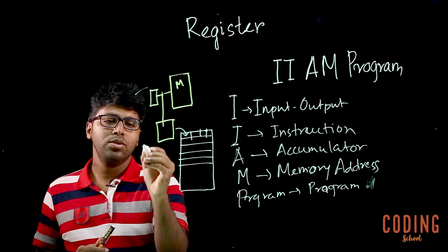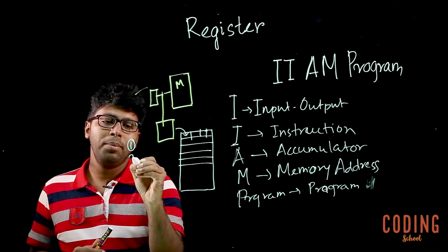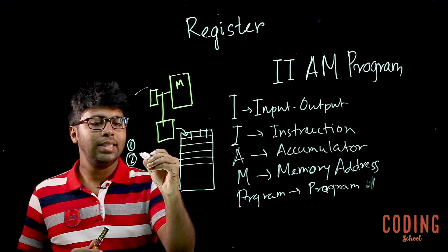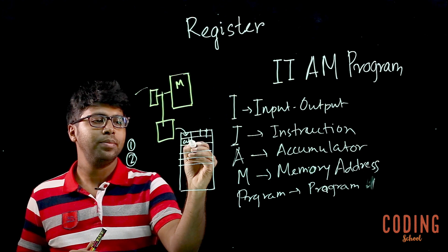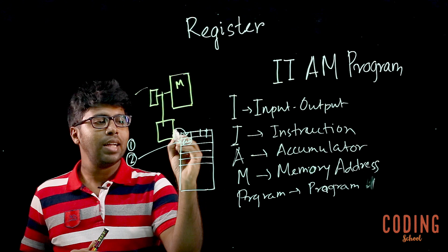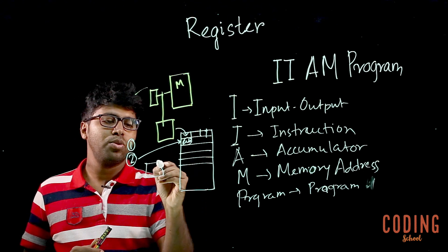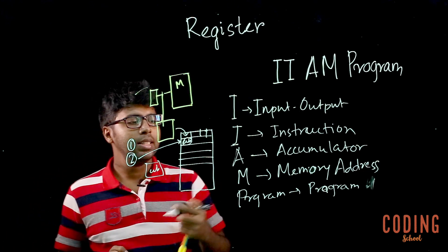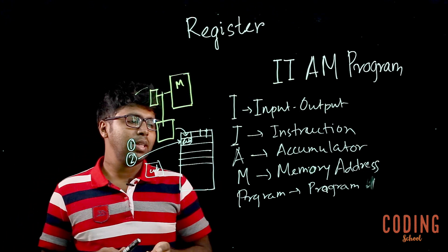We need to execute the instruction. We have to ask in which memory location the exact address is. So the exact name is AB. AB is the exact name for the register address. The same file will be the program register, which holds the address of the current instruction being executed.